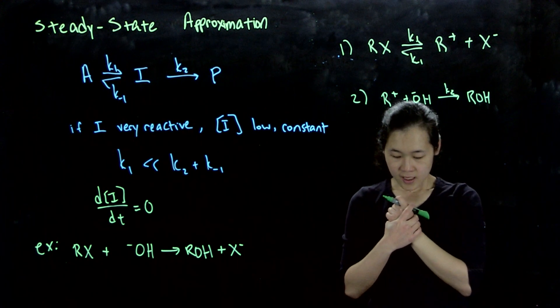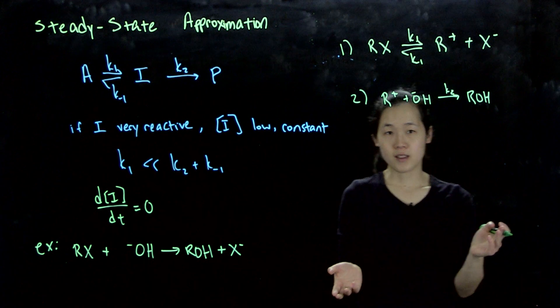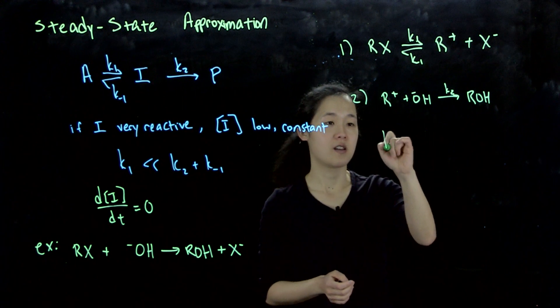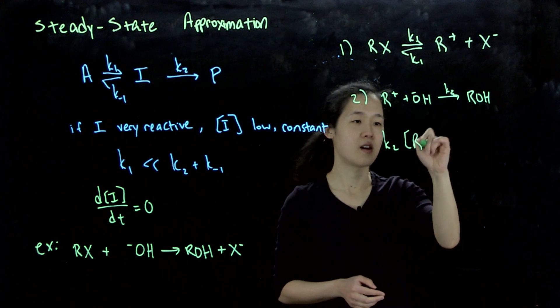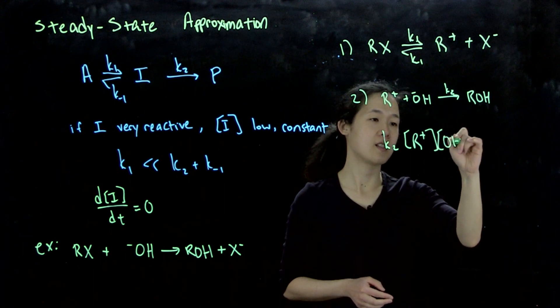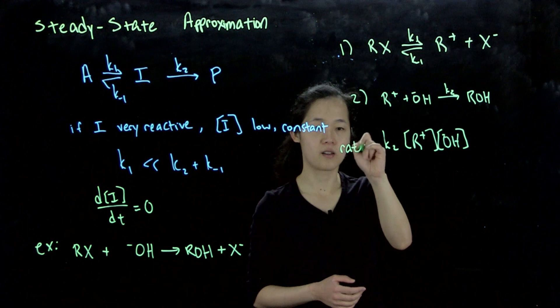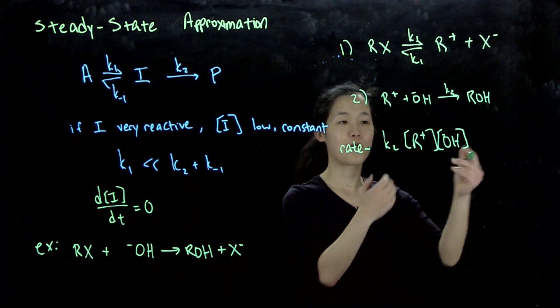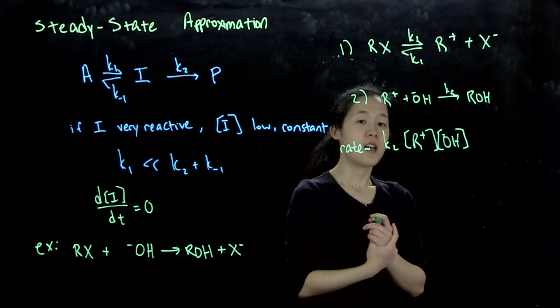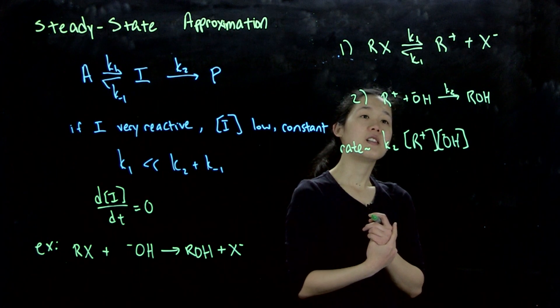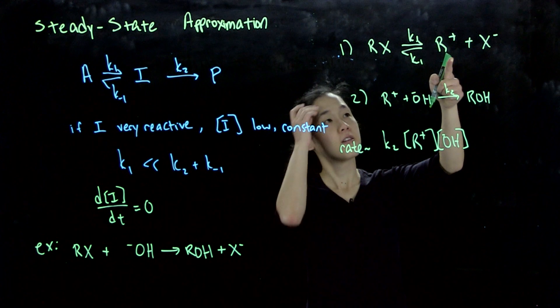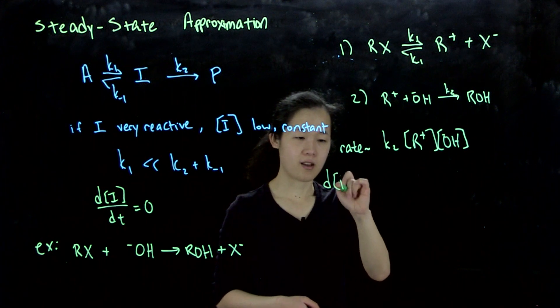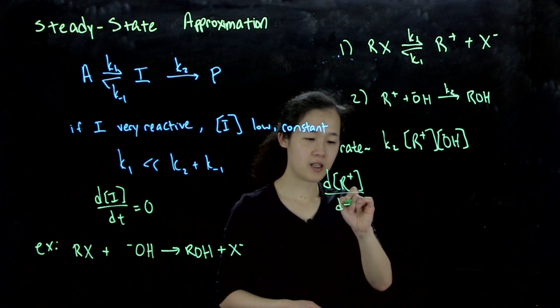How do we want to approach this? For the rate constant K2, we can find the rate law of our formation of products. It's going to be K2 times R+ times OH minus. So this is our rate. I realize that this is the fast step and not the slowest step, but since we're still forming the rate of product formation, we can still say this. But let's think about the rate of formation of this intermediate R+. We're saying that that's zero, right? Because we said that intermediates do not build up.